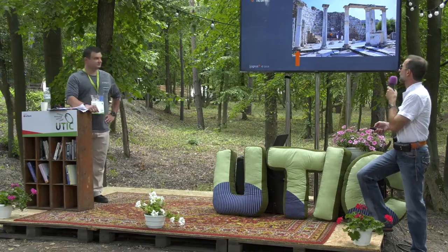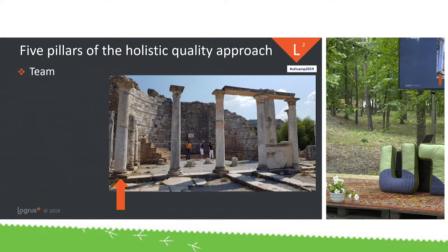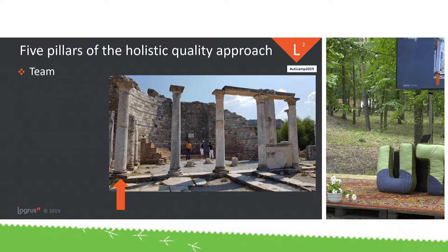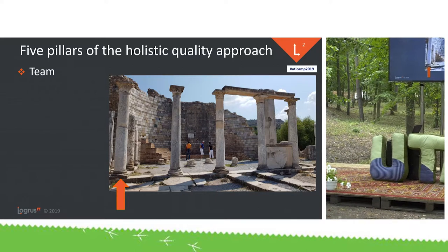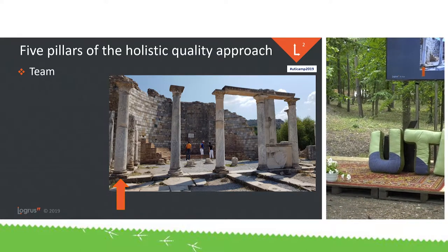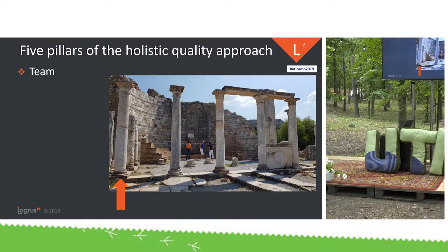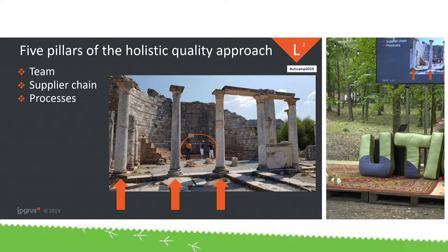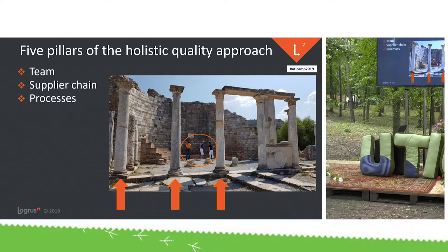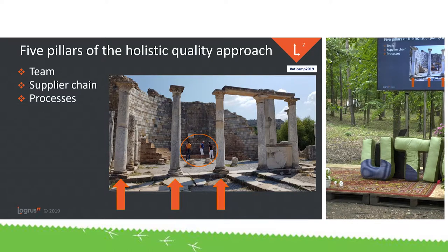So first of all, what do we mean under quality pillars? These are the primary things that you need to have at your company in order to have a sustainable business. The first three are having a great team, having a good supply chain, and having strong viable processes. This more attests to overall business maturity.